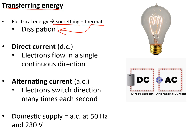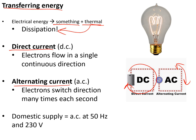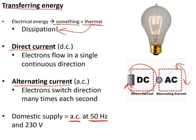Electricity can be classified as direct current or alternating current. Direct current means the electrons flow in a single direction the whole time. Alternating current means the electrons switch backwards and forwards many times each second. Our domestic supply at home is alternating current with a frequency of 50 hertz — meaning it switches direction 50 times a second — and a voltage of 230 volts.